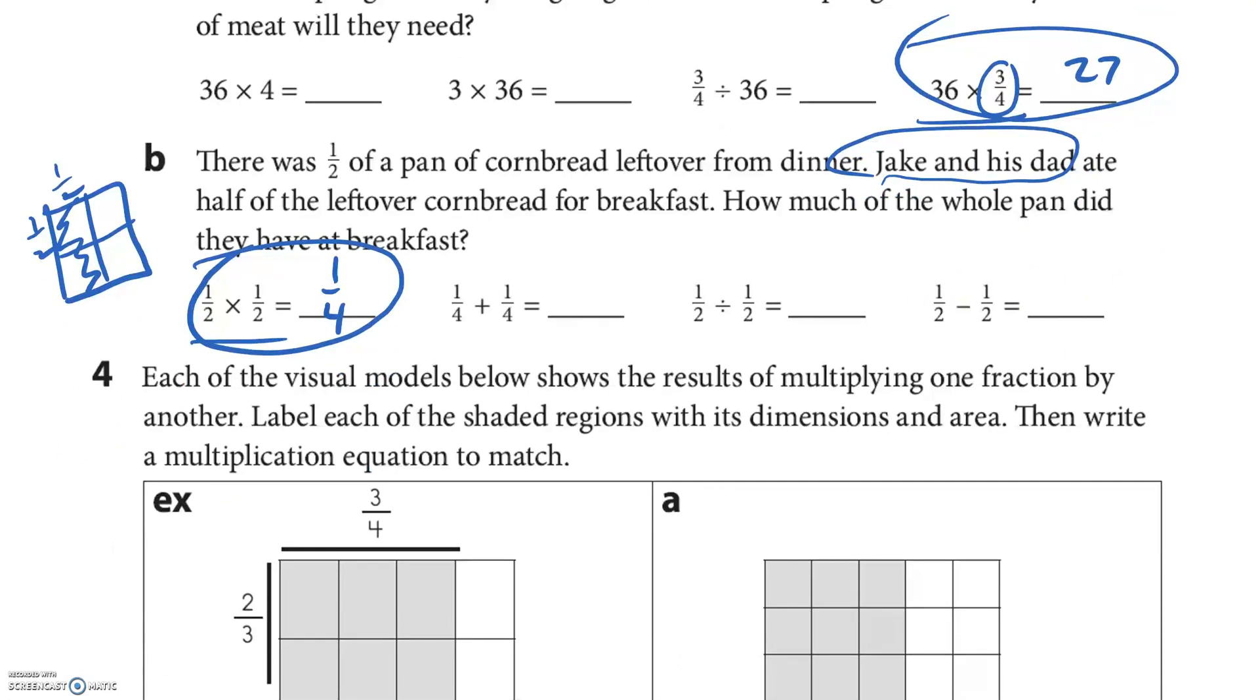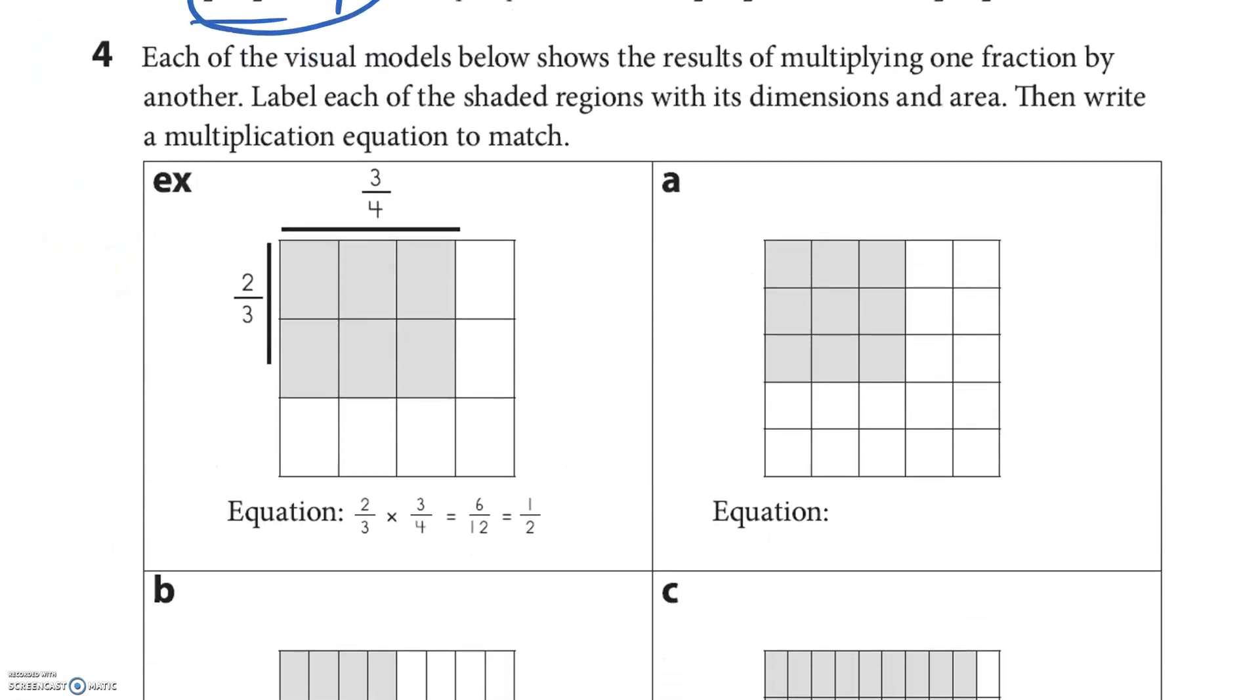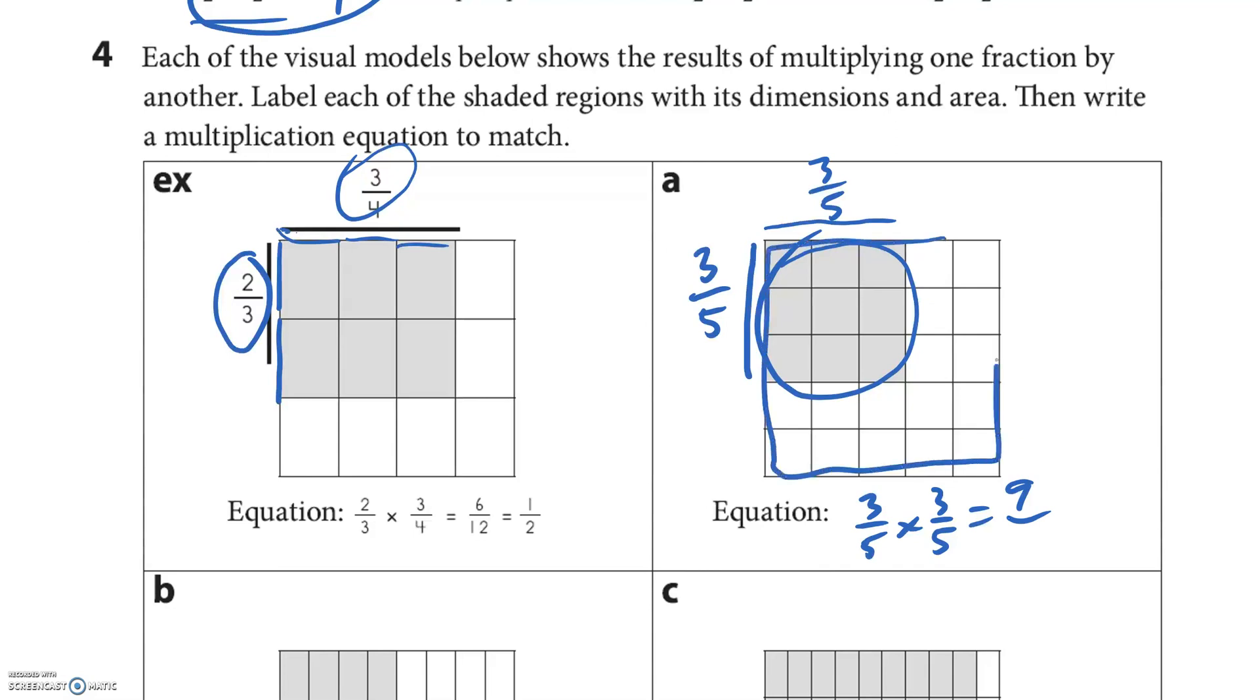Number four: Each of the visual models below shows results of multiplying one fraction by another. Label each of the shaded regions with its dimensions and area, then write a multiplication equation to match. Notice here that's two of the three on that side are shaded, so that's two-thirds. Here is three of the four. There's three over five total there and three over five total there. So three-fifths times three-fifths. It looks like there's nine here and the whole is five by five, so nine twenty-fifths.